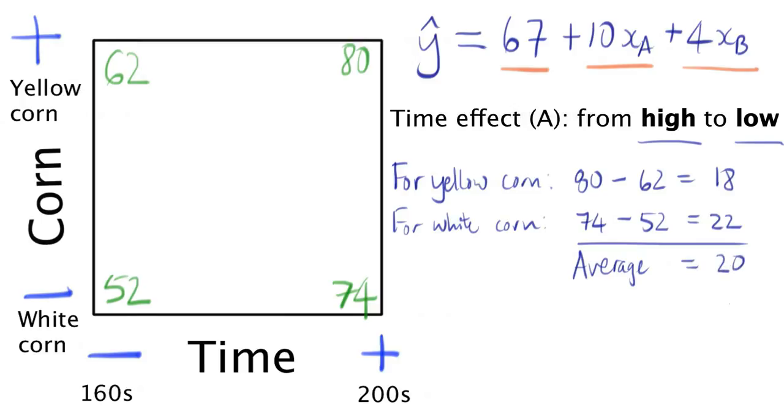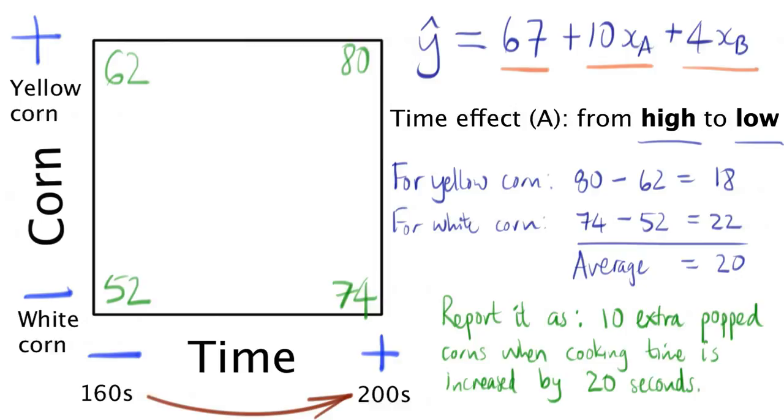And 20 tells us that that's the increased number of popcorns when we go from 160 seconds of cooking to 200 seconds. But it's our convention that we don't report the 20. We will actually report half the size, a value of plus 10. And that's where that plus 10 comes from. So if it's a 20 unit increase for every 40 seconds of cooking time, it's then a 10 unit increase for every 20 seconds of increased cooking time.